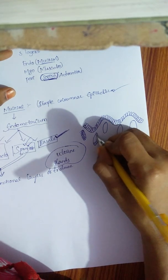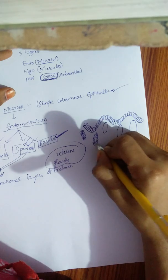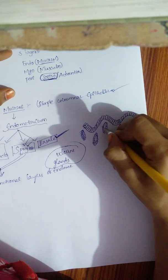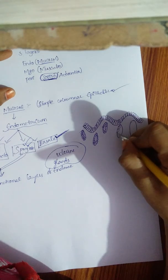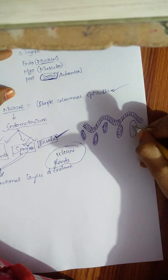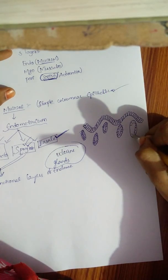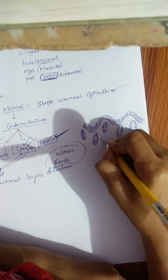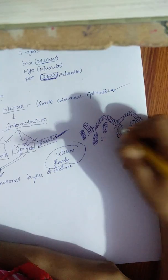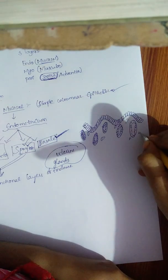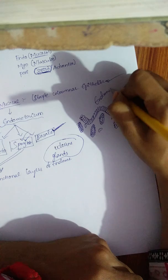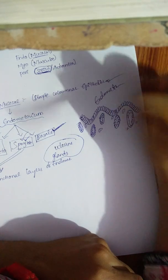The uterine glands are lined by simple columnar epithelium with cilia. They are formed by invagination of the lining epithelium. Blood vessels are also present within the endometrium. This concludes the histology of the endometrium.